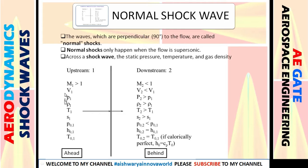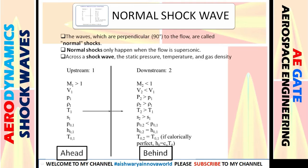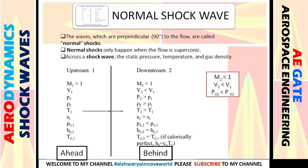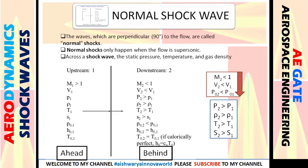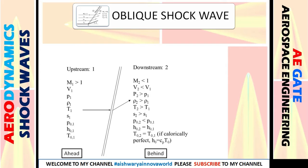Across a normal shockwave, properties like Mach number, velocity, and stagnation pressure decrease, while static properties like pressure, density, temperature, and entropy increase. Stagnation temperature remains constant. The upstream region transitions to the downstream region across the shockwave.